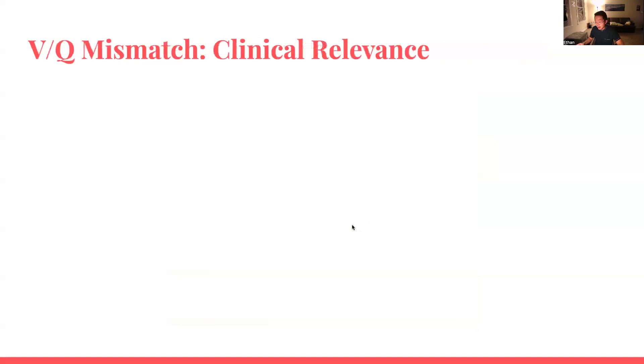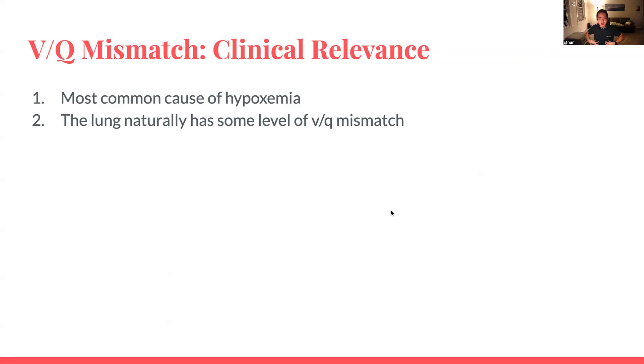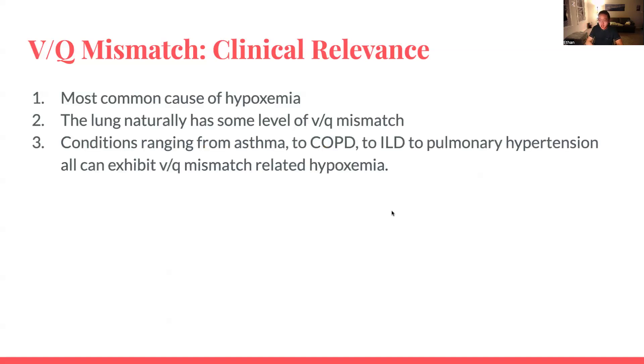It matters because first, V/Q mismatch is the most common cause of hypoxemia. And I want to first add a little qualifier here. V/Q mismatch isn't always necessarily bad. Technically, even healthy lungs have some degree of V/Q mismatch, because the apices at the top of the lung actually have higher V/Q when compared to the bottom. This sort of makes sense if you just think about blood and gravity. Gravity's going to pull blood more towards the bottom of the lung, meaning you get better perfusion in the bottom of the lung. And as perfusion drops off as you go higher in the lung, you're going to have higher V/Qs at the top. Ventilation technically drops off too as you go higher, but ventilation drops off slower than perfusion drops off. So that's why the V/Q ratio at the top is higher than the bottom. So there is some degree of mismatch in a healthy lung. But this mismatch can be exacerbated with a number of pulmonary conditions, from asthma to COPD to interstitial lung disease to pulmonary hypertension. All of these can exhibit V/Q mismatch-related hypoxemia.